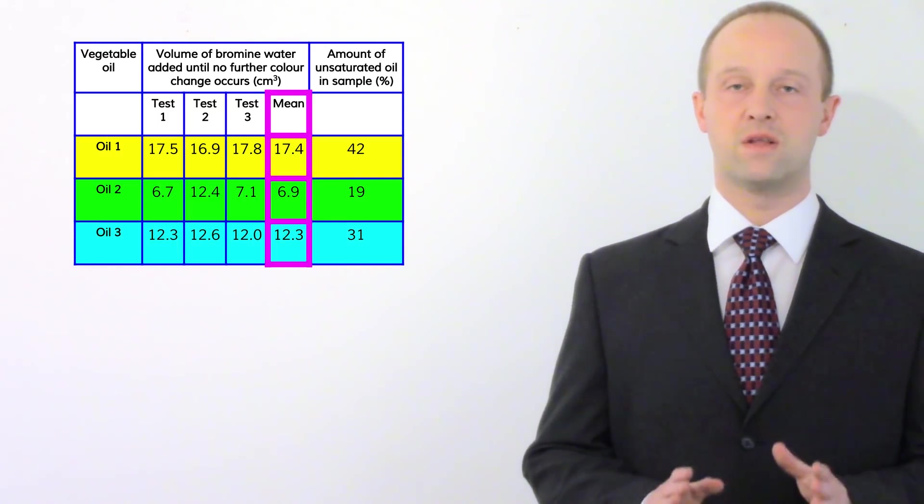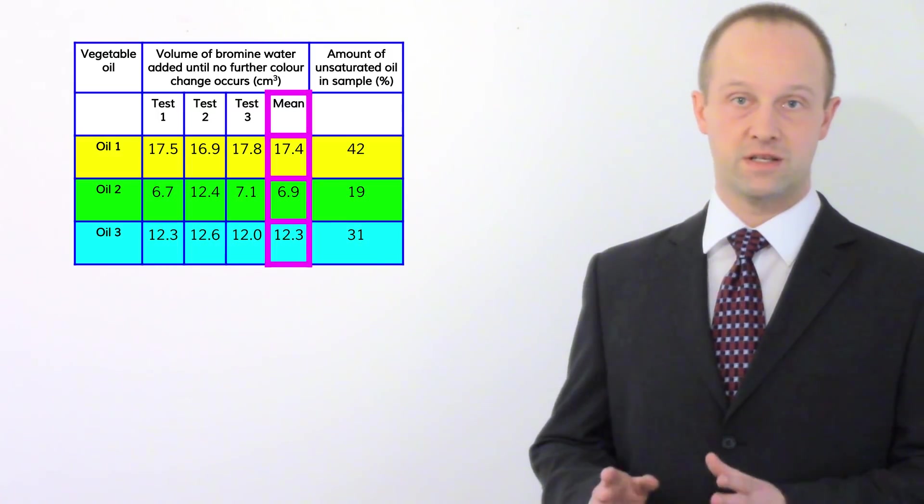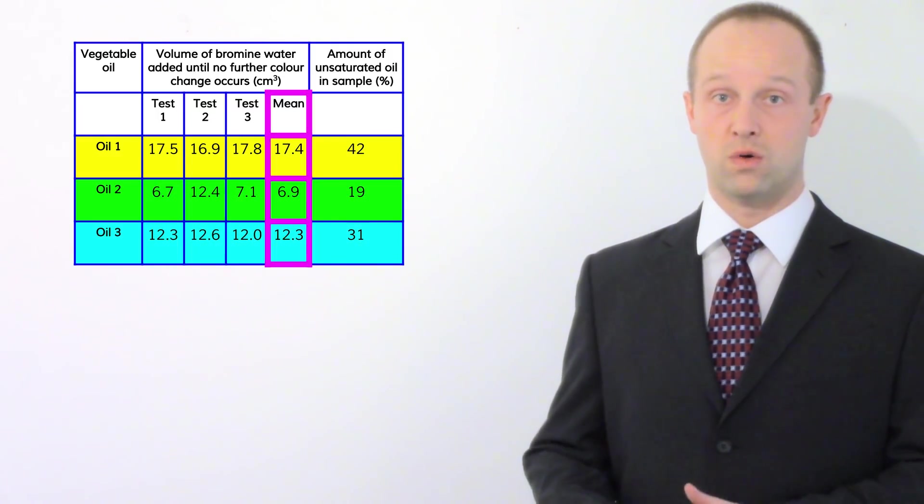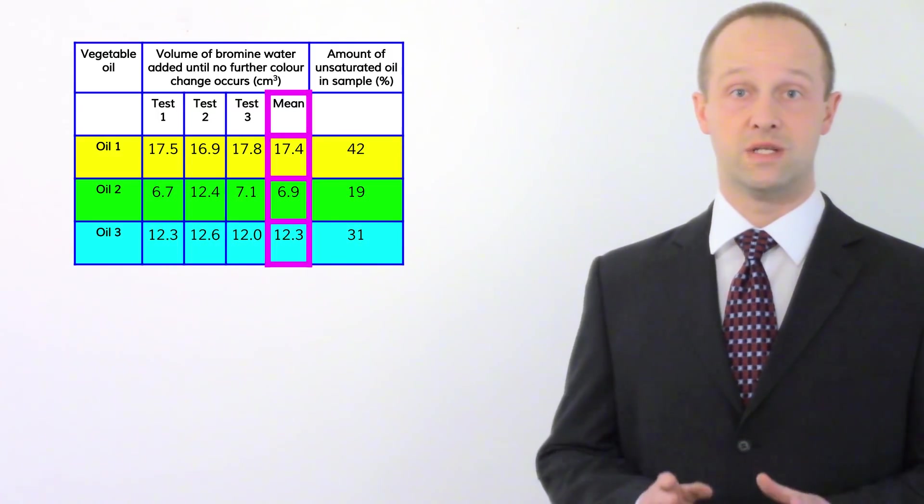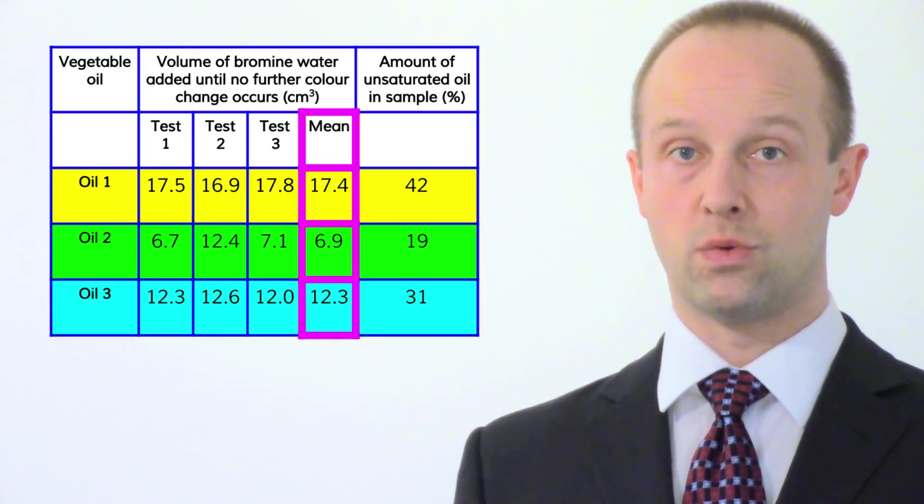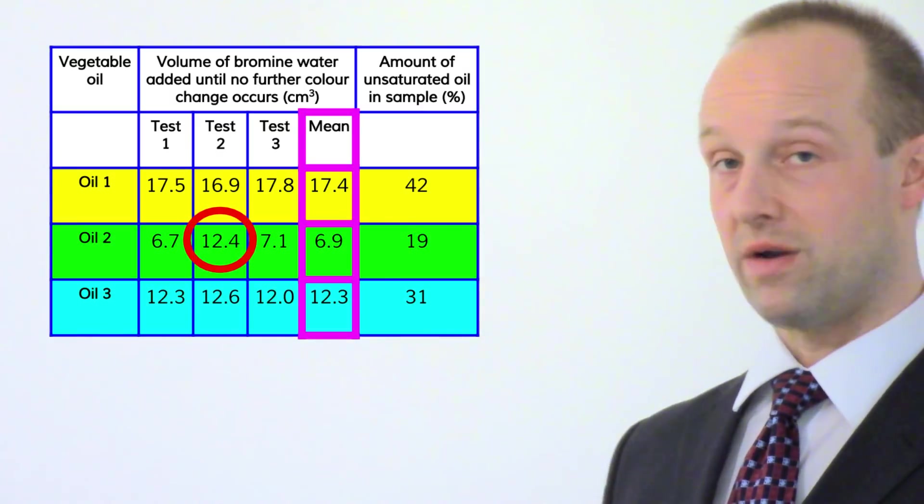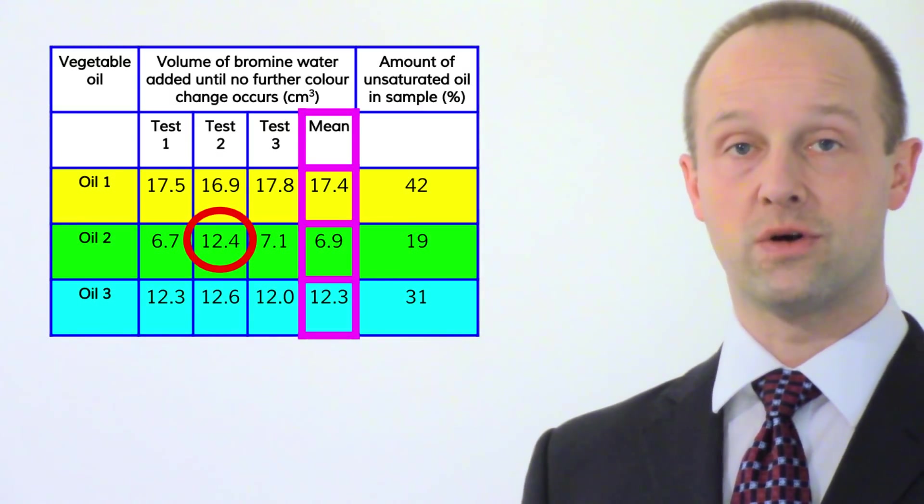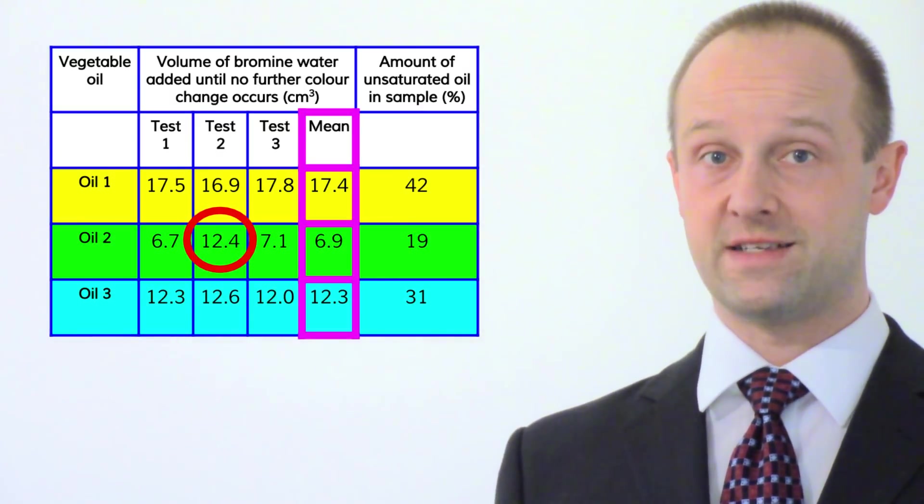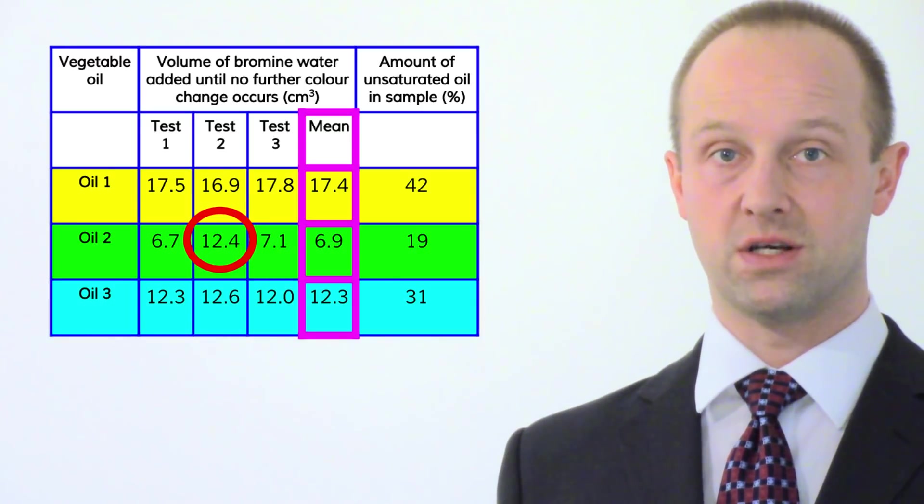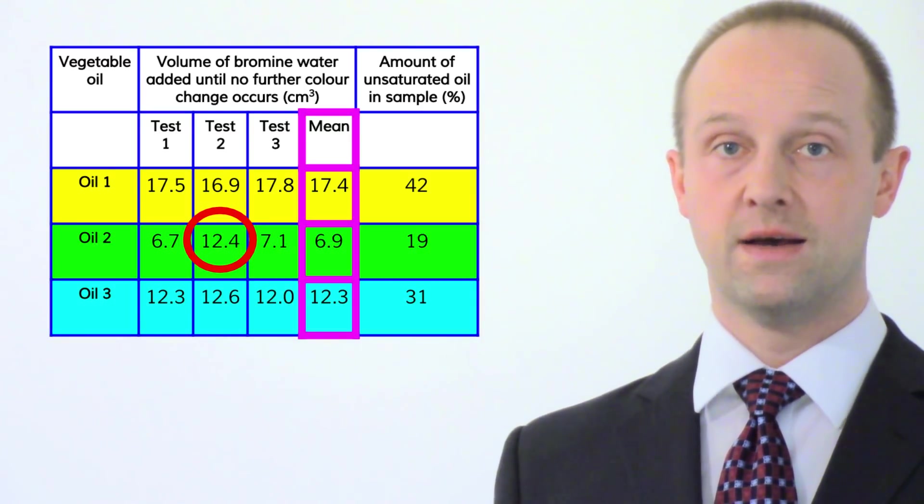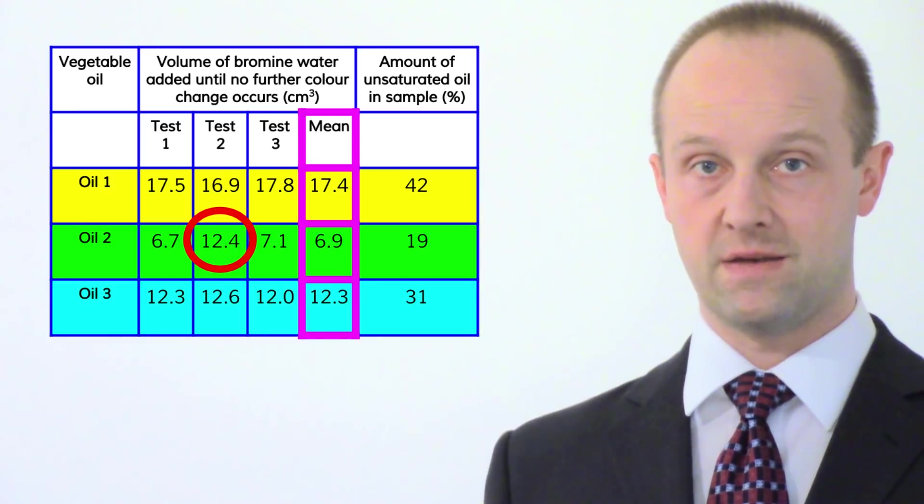And what you're looking for when you're looking for an anomaly is you're looking for that result which is sticking out like a sore thumb. You're looking for the result which is very different to the others in its own row or very different to its mean. As you've no doubt already spotted we've got one which fits that description. This one for test two for our second oil, that one is quite different to the other two results for test one and test three and it's also quite different to the mean for that row.